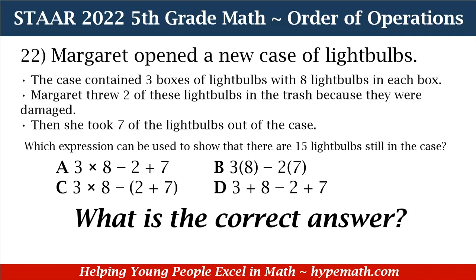So we have first three times eight, and then minus, because two were damaged and seven were taken out by Margaret. Those two totals need to be subtracted from the total amount. That means we need to group the two and the seven together using parentheses before subtracting.